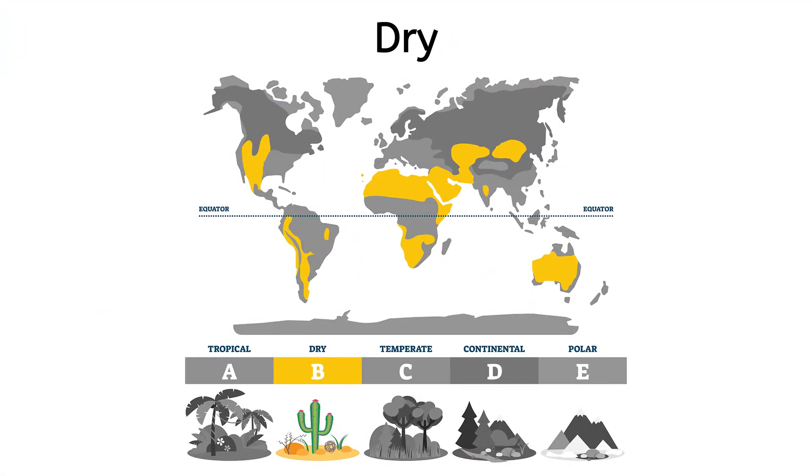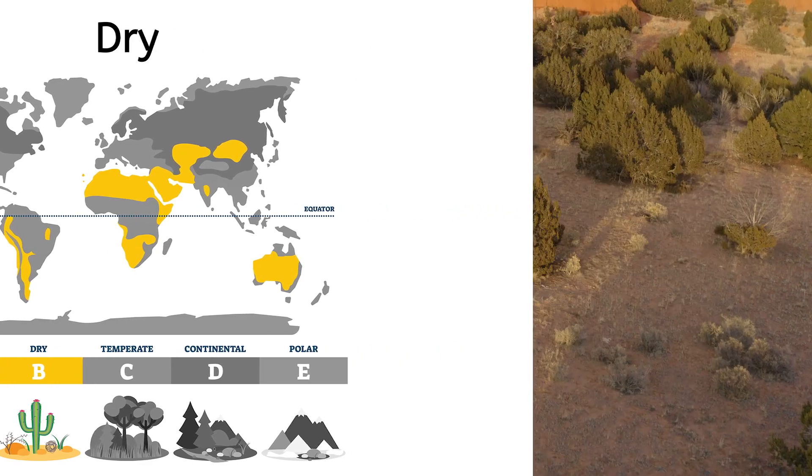Dry climates, or deserts, get very little rain. You may think deserts are always hot, but deserts can have a wide range in temperature. They can be hot like the Sahara or cold like the Gobi. Some deserts are hot during the day and much colder at night. If I lived here, I would need clothes for hot days and cold nights, but no raincoat.